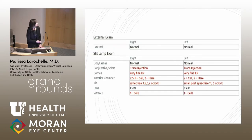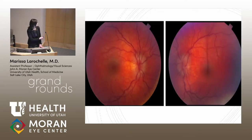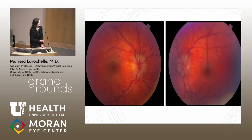Slit-lamp exam was remarkable for a moderate amount of anterior chamber inflammation in both eyes, as well as posterior synechiae and a little bit of vitritis. Color fundus photos showed a hazy view and marked optic nerve swelling in both eyes.